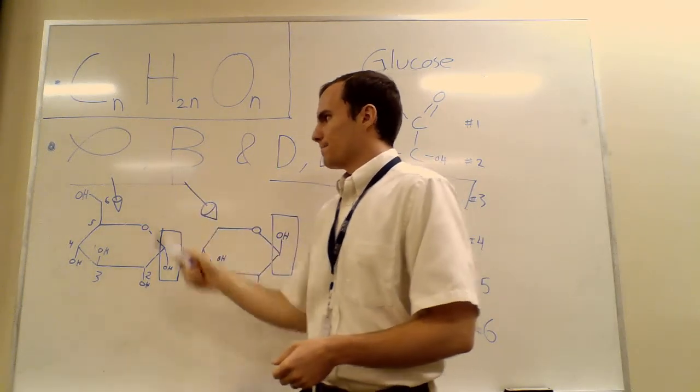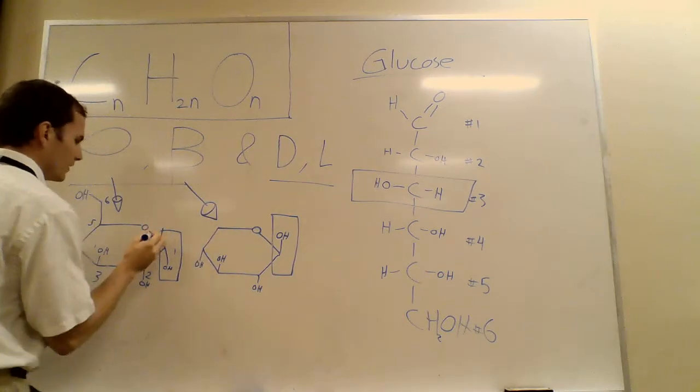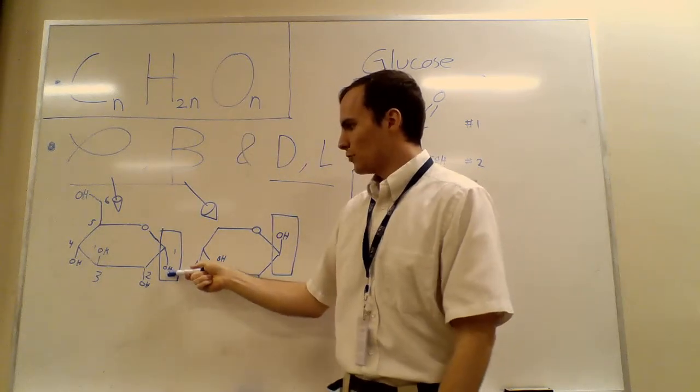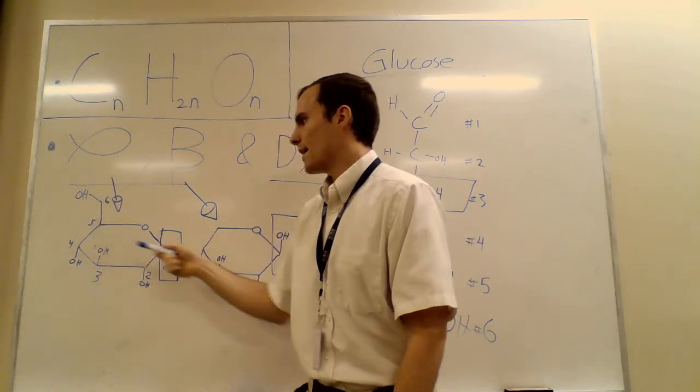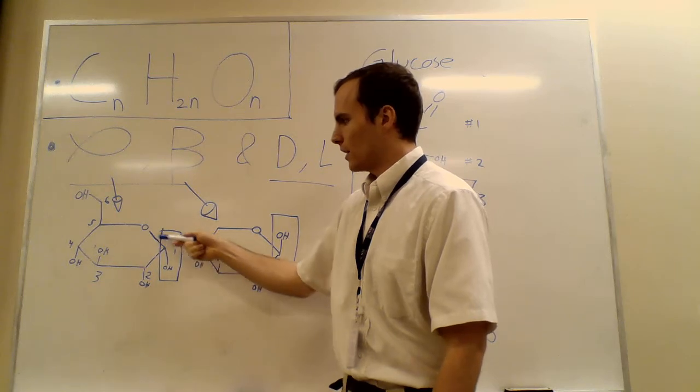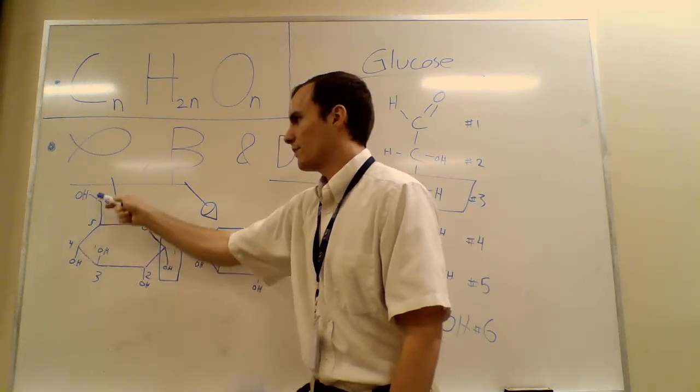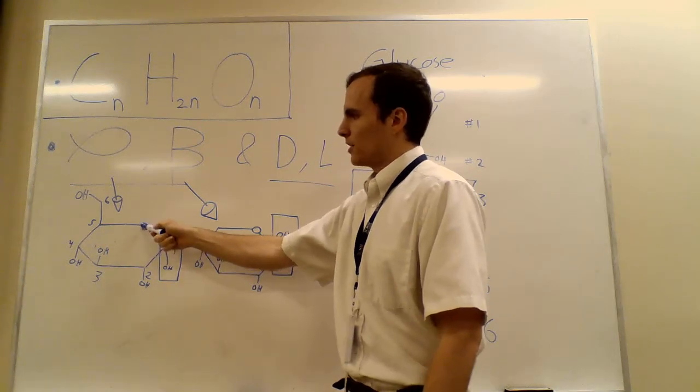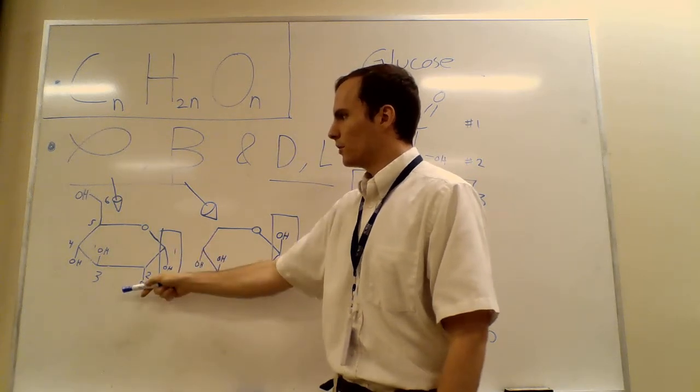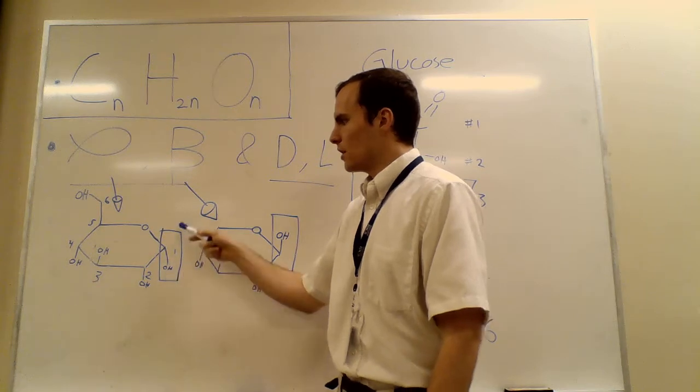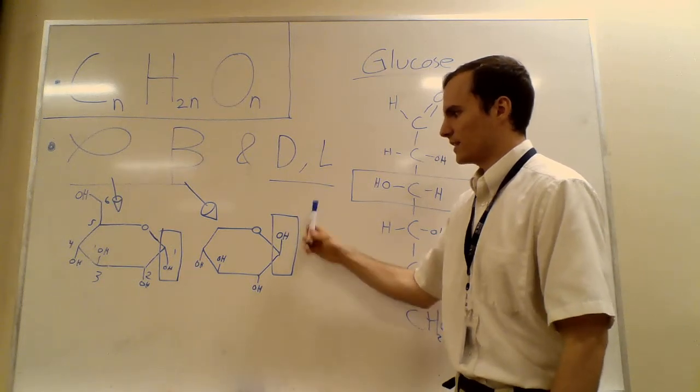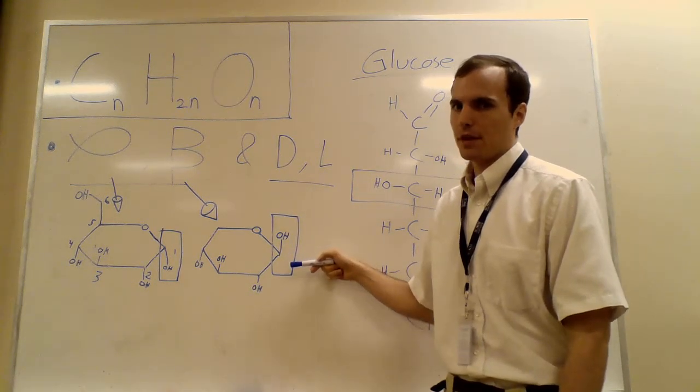So alpha and beta. If you look down here, there's a ring that shows hydroxyl groups coming off in a certain pattern. This pattern of hydroxyls down, down, up, down is glucose. I've numbered the carbons one, two, three, four, five, and then six up here. You number the carbons coming off of the oxygen. This one is called alpha, this boxed hydroxyl that I put over here. This is what makes it alpha glucose versus over here where the hydroxyl is facing up. That is beta glucose.